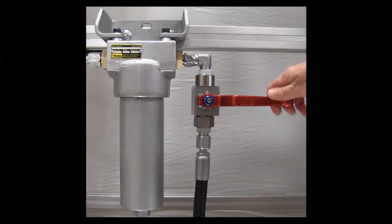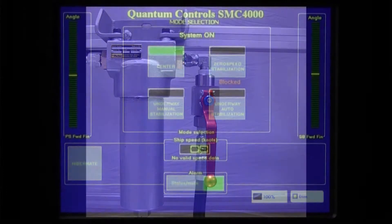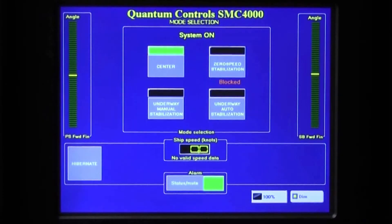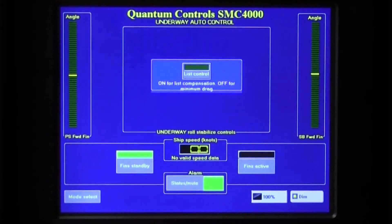Open the hydraulic isolation valves. Then, return the stabilizer main controller to the desired operating mode.